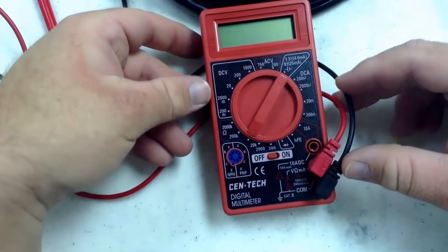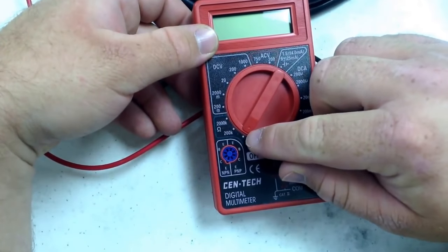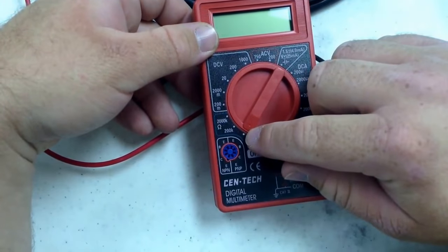So you want to take your Syntec Digital Multimeter from Harbor Freight and you want to set it to here, which is 200 watts of resistance.